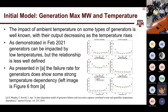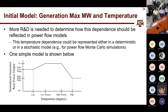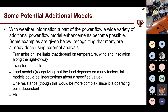We're also working on models for generators and temperature. For thermal units it's not a direct correlation — it's more probabilistic. Generators are more likely to fail at both high and low temperatures. So we're setting up probabilistic models to play different conditions and ask what would happen under 1949 weather or other scenarios. Another model we're working on heavily, with utilities, is transmission line limits — they depend on temperature, wind, and insulation along the right-of-way. The simplest approach is making them temperature-dependent.